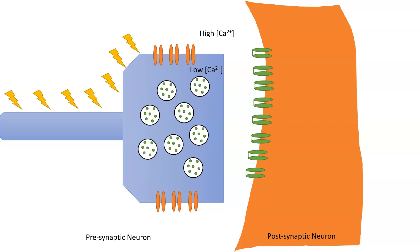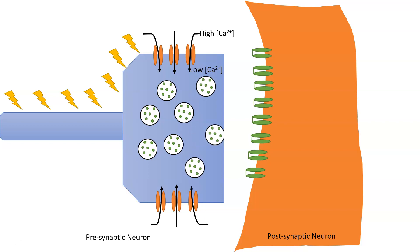We have an ion channel and a concentration gradient — I hope you know what this means at this point. When the channels open, calcium will enter the cell due to the gradient, and calcium is the signal that causes the vesicles to fuse with the membrane and trigger the release of the neurotransmitter. The synaptic vesicles will fuse with the membrane and dump the neurotransmitter into the synaptic cleft.